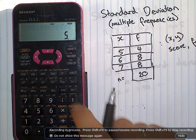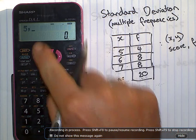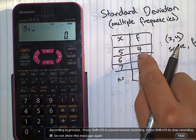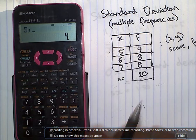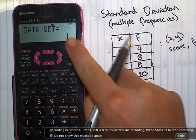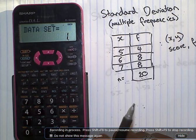So, five is our score, enter that, comma, and then we're going to say how many times it occurs. Four times. And then M plus. Data set is saying we've entered in one type of data, not one individual.